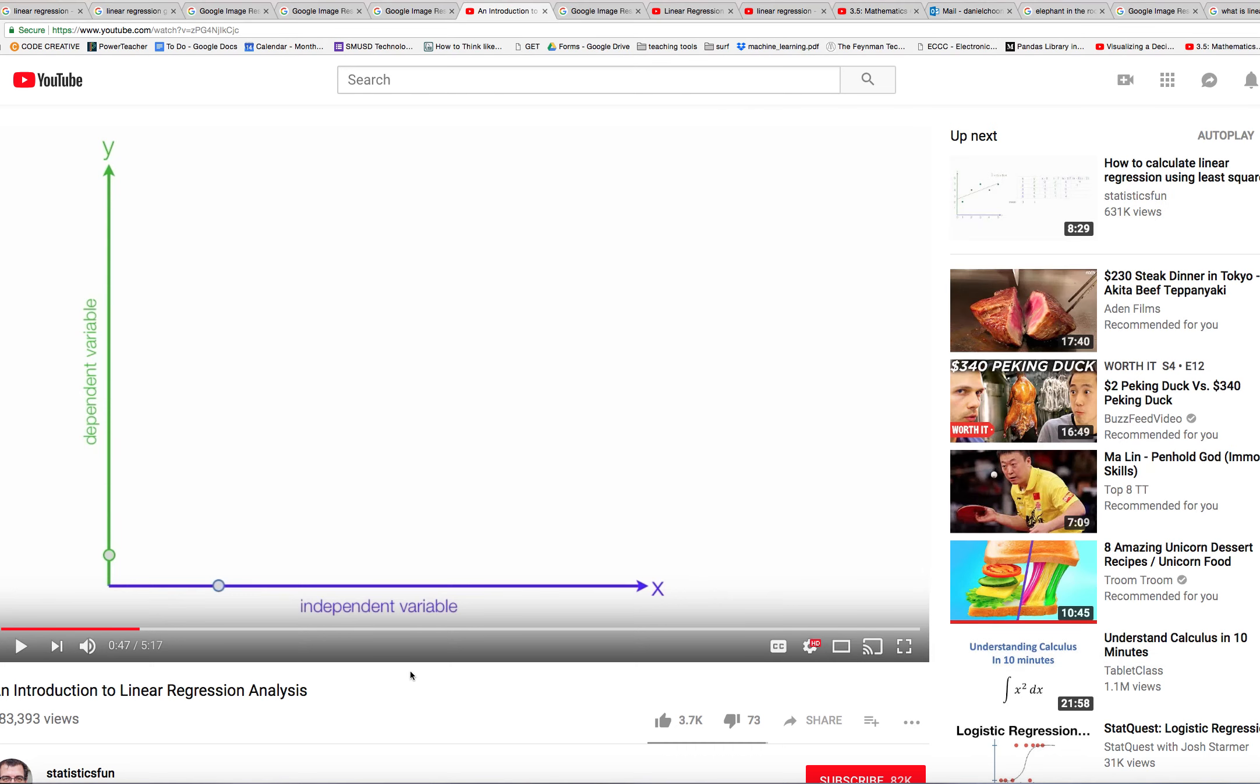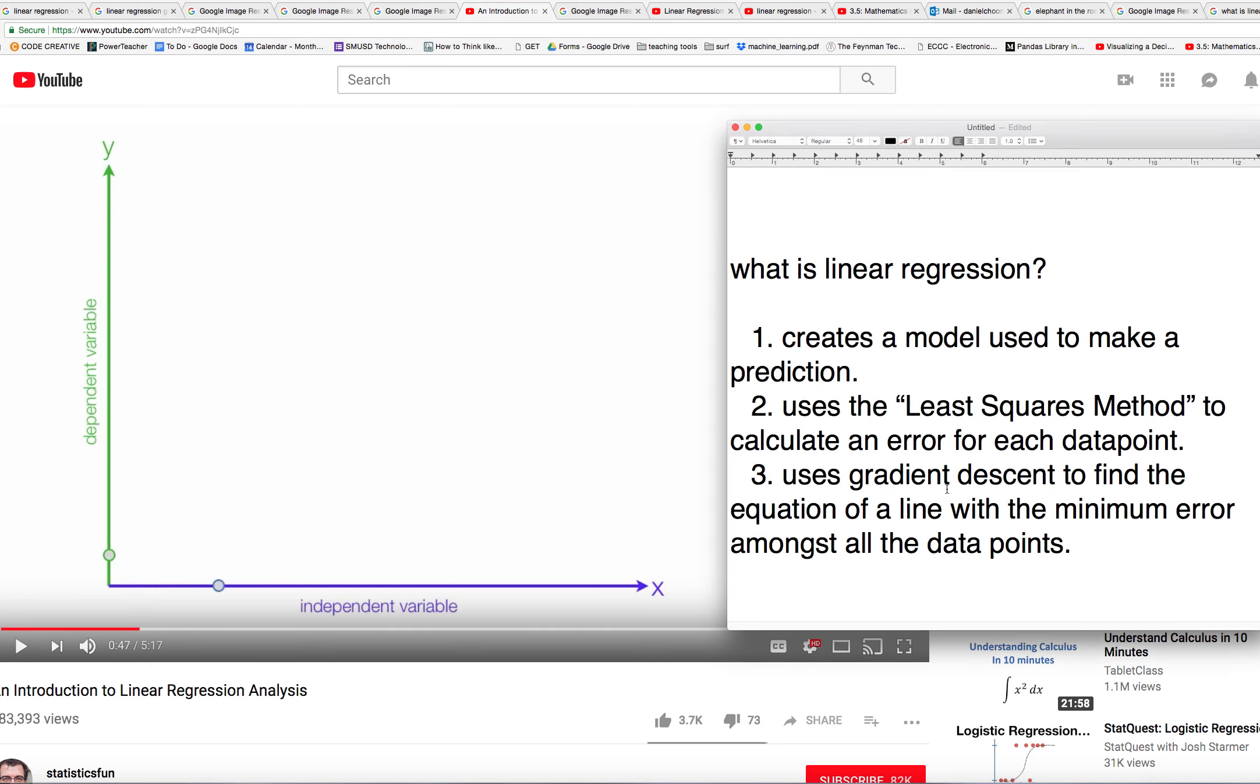How does it go? We have this X and Y graph here which shows a dependent variable and an independent variable. A dependent variable is the variable that you are going to be given when you're trying to make a prediction. The independent variable is the value that you don't know when you're trying to make a prediction.